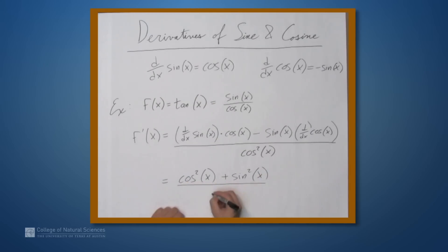And this whole thing over cosine squared x. And now we can simplify. So the numerator, cosine squared plus sine squared, that's the Pythagorean formula, gives us 1 over cosine squared, which we can rewrite as secant squared of x. So that's the derivative of tangent x.